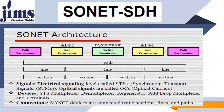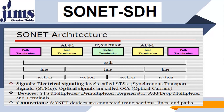The SONET architecture has path termination, line termination, section termination with regenerators, line termination from add-and-drop multiplexers, and medium. Electrical signal levels are called STS — Synchronous Transport Signals — and optical signals are called OCs — Optical Carriers. The devices involved in the architecture are STS multiplexers, regenerators, add-and-drop multiplexers, and terminals. SONET devices are connected using sections, lines, and paths.